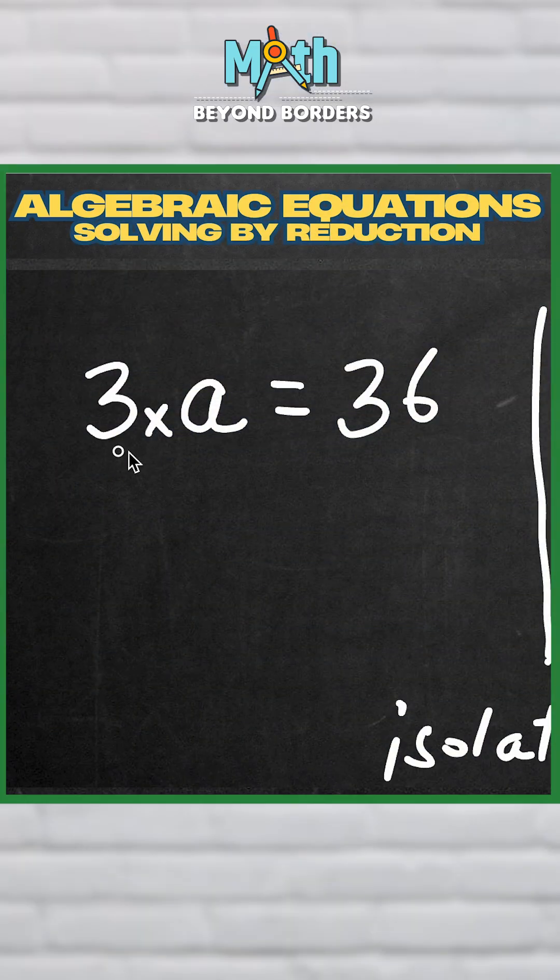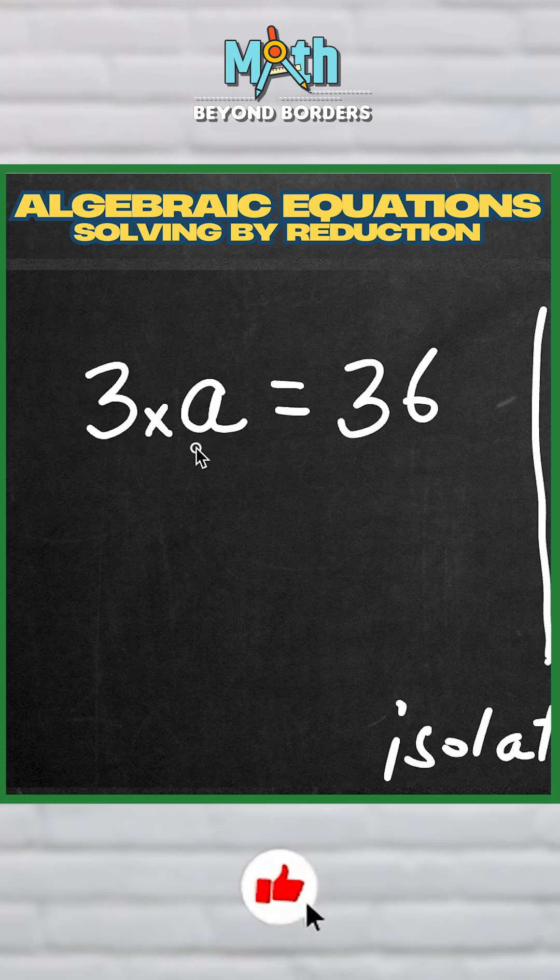So for example, you see that 3 times a is 36. How can we get rid of this 3? I know this 3 is a multiply, and what is the opposite action of multiplying? Dividing. So what I will do is 3 times a divided by 3.